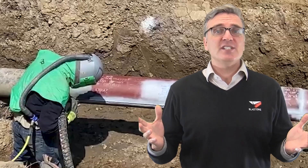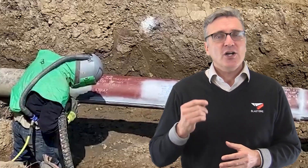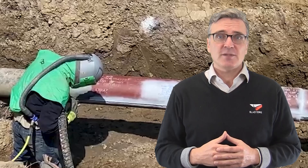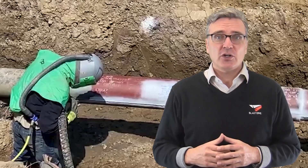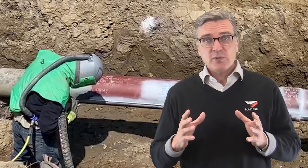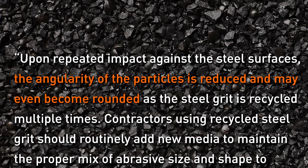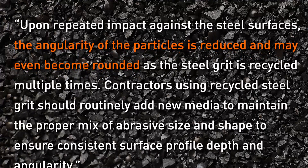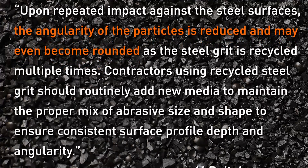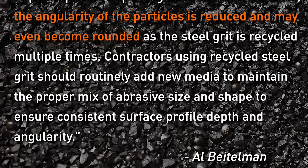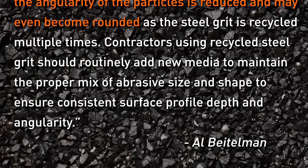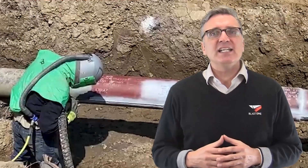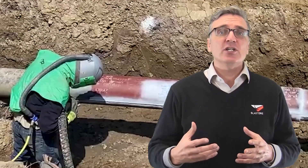And if you're saying, no worries, I don't use steel shot — I use steel grit — understand that recycled abrasives will also eventually round off through repeated impact with the steel surface. Here's an excerpt from a U.S. Army Corps of Engineers article by Al Biedelman, which discussing recycled steel grit states: upon repeated impact against the steel surfaces, the angularity of the particles is reduced and may even become rounded as the steel grit is recycled multiple times. Contractors using recycled steel grit should routinely add new media to maintain the proper mix of abrasive size and shape to ensure consistent surface profile depth and angularity. When recycling any abrasive, understand its angularity will decrease with each usage.